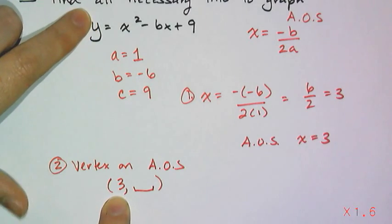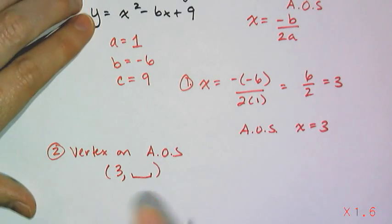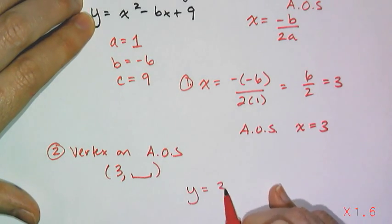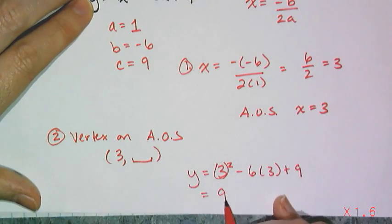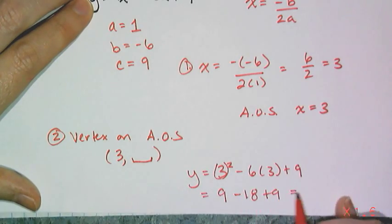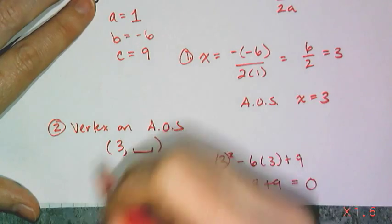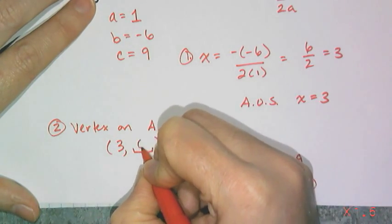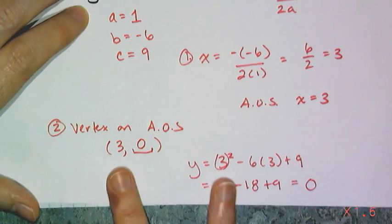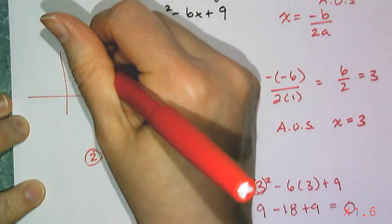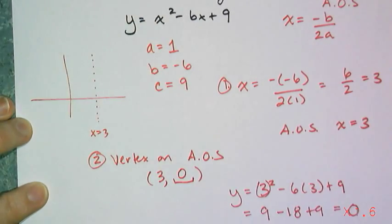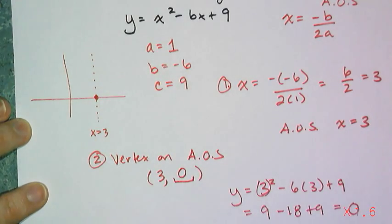And so the y value is going to be 3 squared minus 6 times 3 plus 9. So I get 9 minus 18 plus 9, which gives me 0. So my vertex is located at the point 3 comma 0. So what I know graphically about my parabola is that at the line x equals 3, I have my axis of symmetry, and I have my vertex at the point 3 comma 0. So I have one point down.